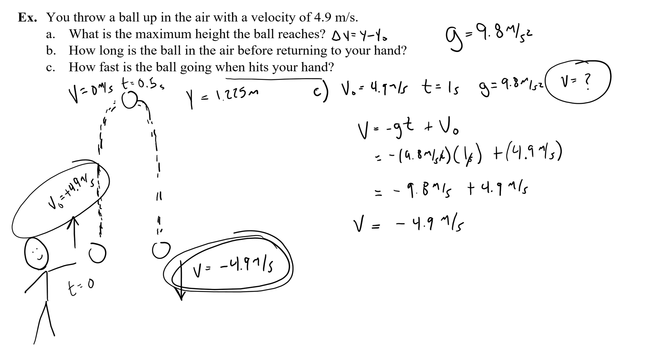This is true of all freefall motion problems. The vertical velocity upward is equal to the vertical velocity downward at the same height. So you can always use that fact to your advantage when you're solving freefall motion problems. Well, congratulations, you did it, this video is done.